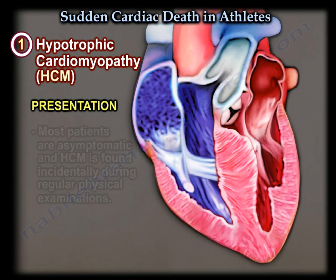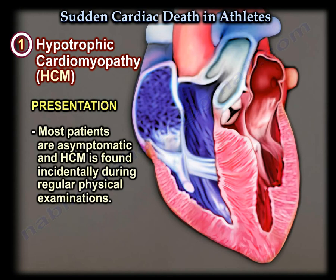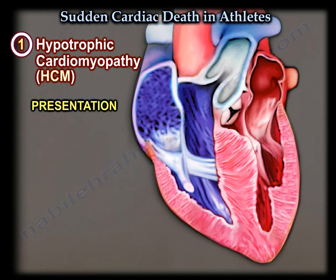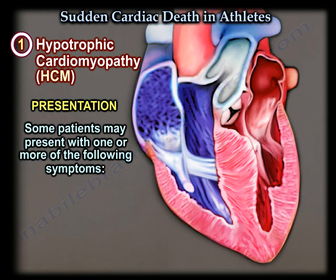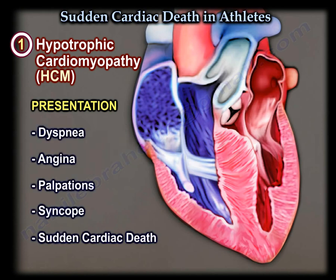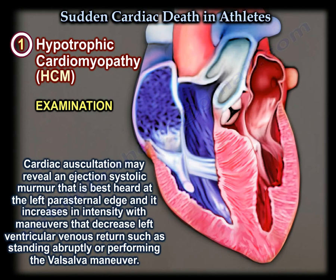Most patients are asymptomatic, and hypertrophic cardiomyopathy is found incidentally during regular physical examinations. Thorough history taking is one of the most important parts of the examination. Some patients may present with one or more of the following symptoms: dyspnea, angina, palpitations, syncope, or sudden cardiac death. Cardiac auscultation may reveal an ejection systolic murmur that is best heard at the left parasternal edge, and it increases in intensity with maneuvers that decrease left ventricular venous return, such as standing abruptly or performing the Valsalva maneuver.